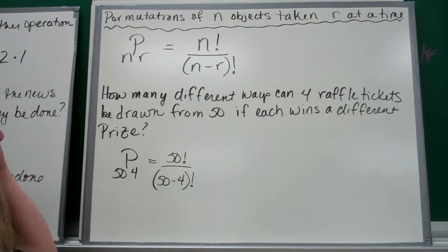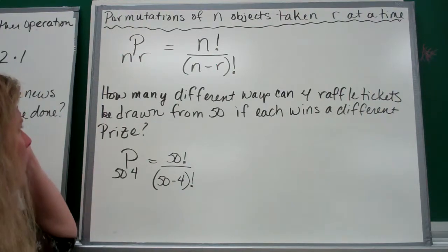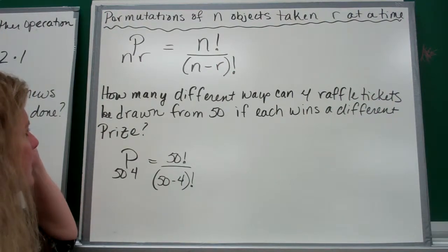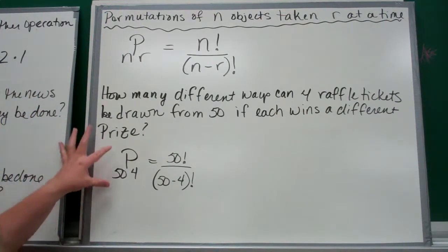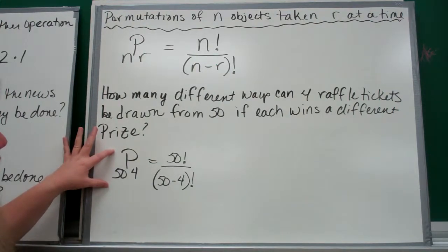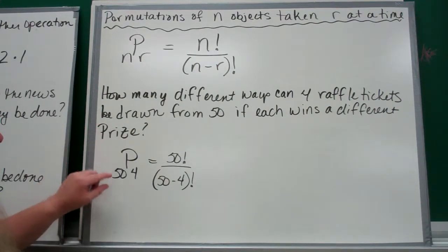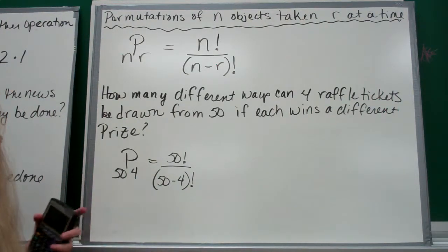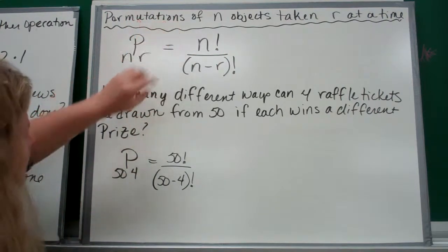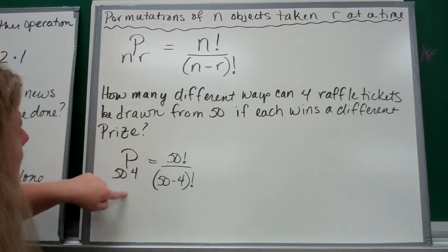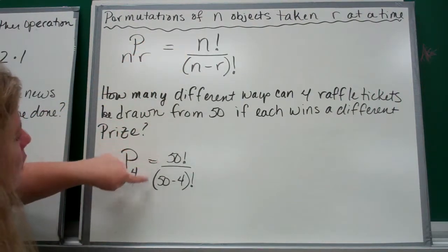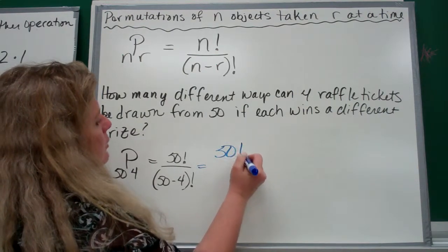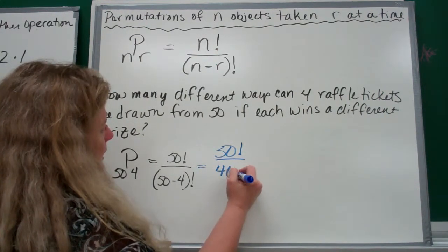How many different ways can four raffle tickets be drawn from 50 if each wins a different prize? That means how many different permutations can I have of these 50 items taken 4 at a time. Using this formula, I've got 50 items all together, I'm going to pick 4 at a time. It's going to be 50 factorial divided by (50-4) factorial, which is 50 factorial divided by 46 factorial.